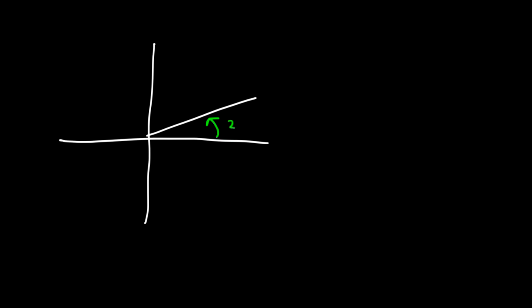For example, here we have an angle of 30 degrees. If we travel around a circle — 90, 180, 270, 360 — this is also 390 degrees. So 30 degrees and 390 are coterminal angles because they point to the same terminal ray or terminal side.